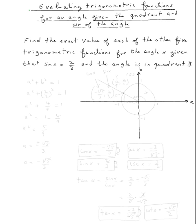Since the angle is in quadrant two, let's draw a random angle in quadrant two. So this is the angle x — it's in quadrant two. Now let me draw a unit circle. Assume this is a unit circle.